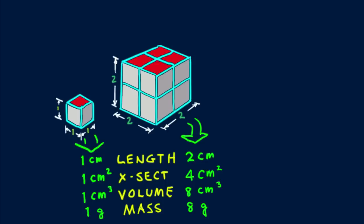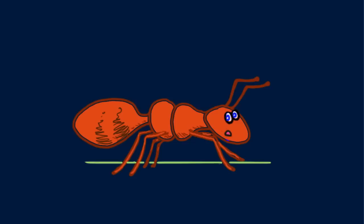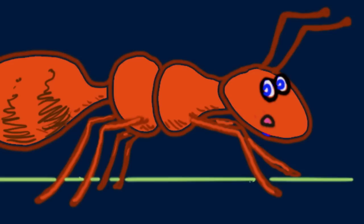Although I show the simple example of a cube, the principle applies to an object of any shape. Let's relate this to an ant scaled up by a factor of two. Would the twice-sized ant be twice as strong? No. Although its twice-as-thick legs would have four times the cross-sectional area and be four times as strong, it would be eight times as heavy. For comparable effort, it would be able to lift only half its weight — relative to its new weight, the ant would be weaker than before.